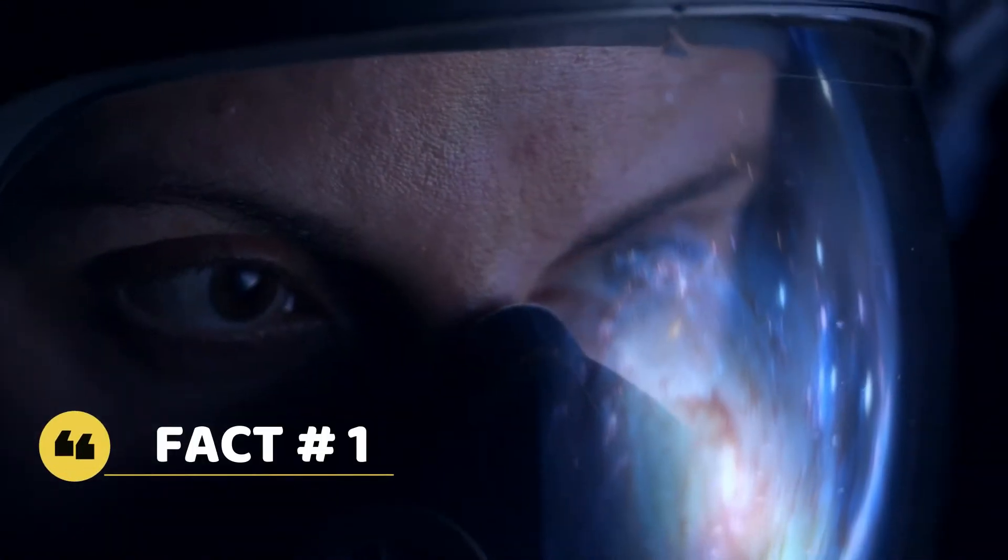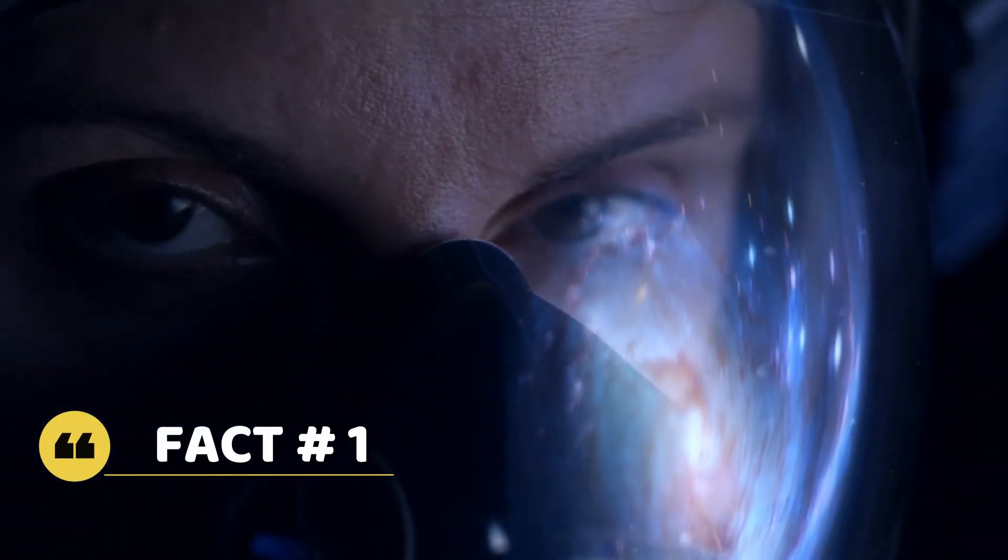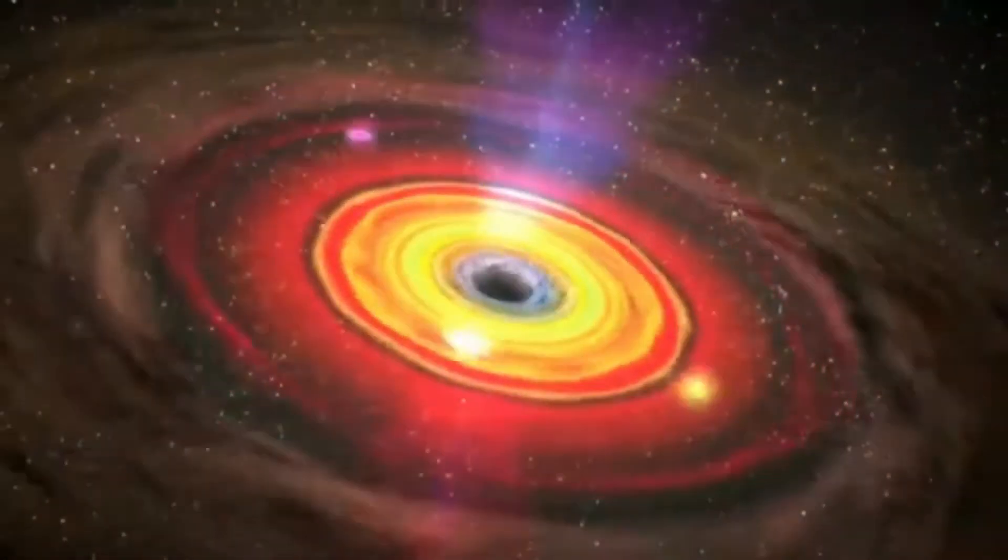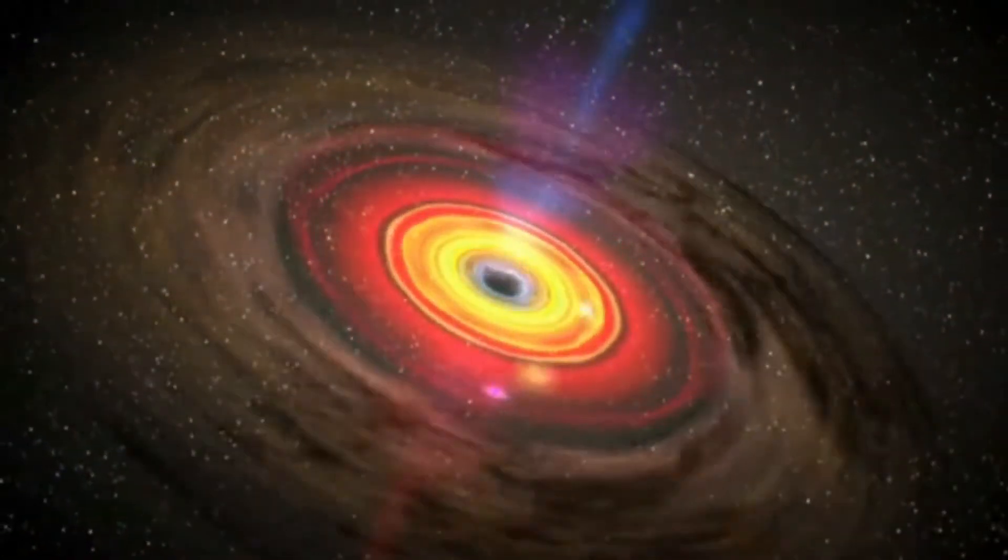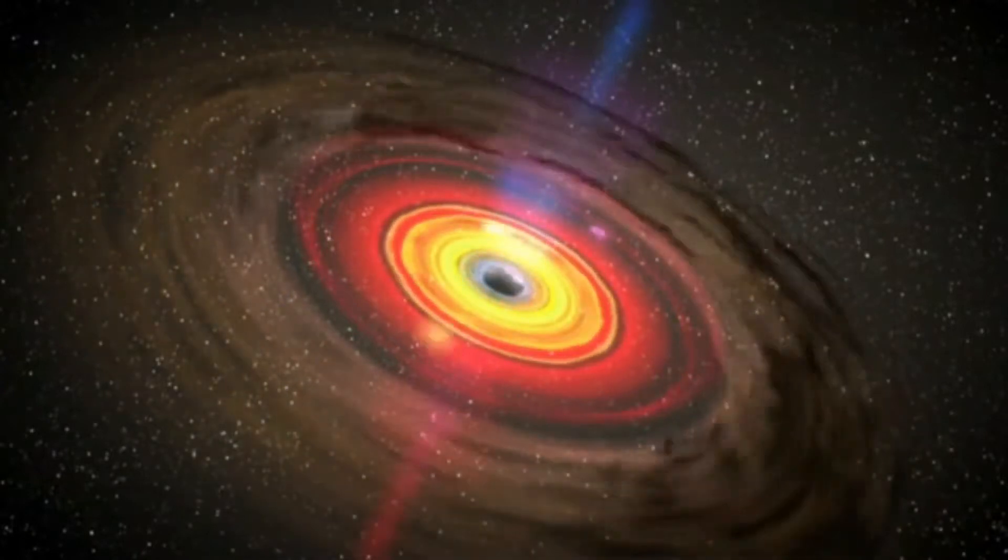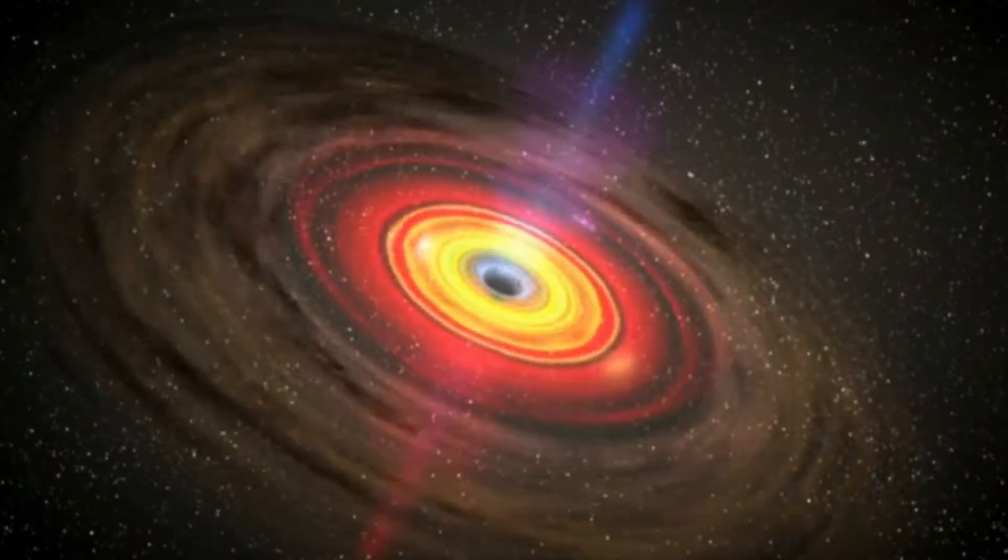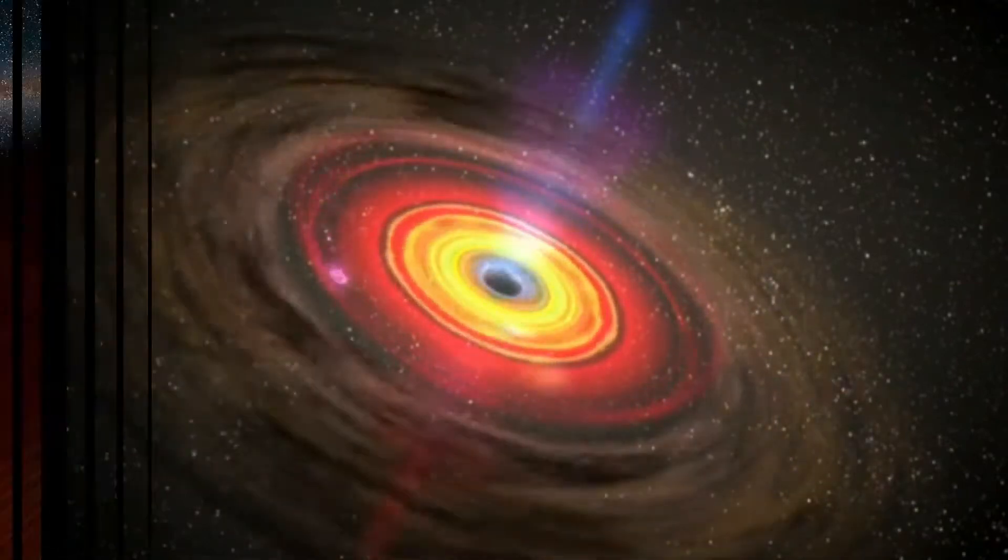Fact number one: You can't directly see a black hole. A black hole is called a black hole because of its color, especially since light can't escape. What we can see though is the effects of a black hole. Analyzing the surrounding area of a black hole, we can see its effects upon its environment. For example, a star that's close enough to a black hole can be seen being ripped apart.